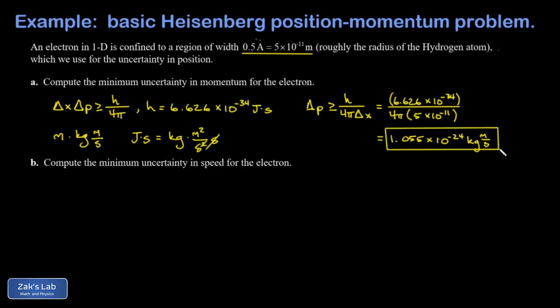In part B, we're asked to find the minimum uncertainty in speed for the electron. We have the uncertainty in momentum. We need the mass of an electron, which is about 9.11×10⁻³¹ kilograms.